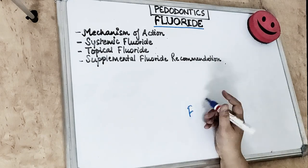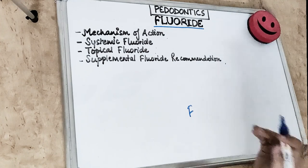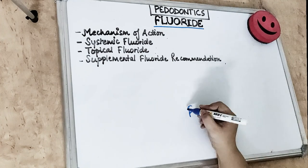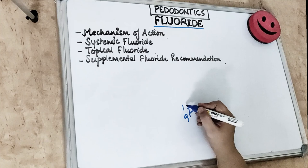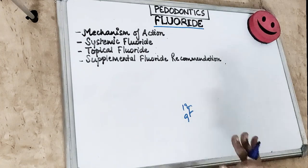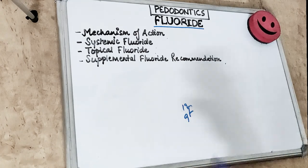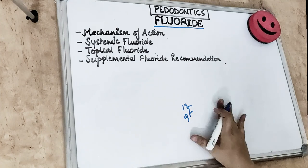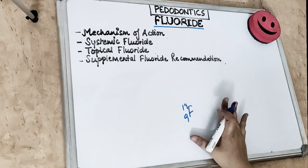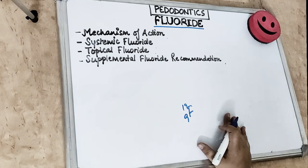Fluoride, as we all know, is the most electronegative element — we have all studied this in chemistry — with an atomic number of 9 and atomic weight of 19. Fluoride never exists in the free state in nature, yet it is present everywhere: in the atmosphere, biosphere, lithosphere, and in all living organisms. It is also present in the soil.